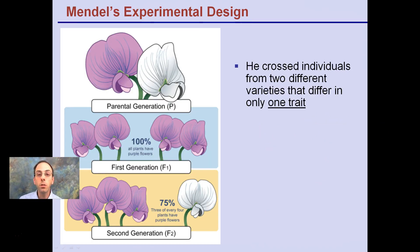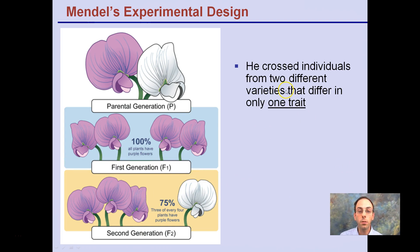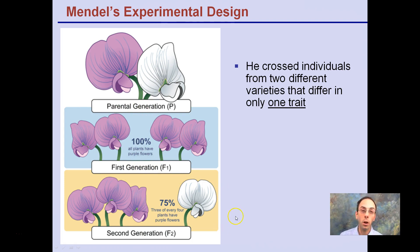His experimental design crossed two individuals from two different varieties that differ in only one trait. He had a purple and a white, bred them together, and got all purples. Then in the F2 generation, 75% purple and 25% white were produced — we saw that in our previous crosses.